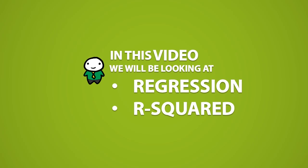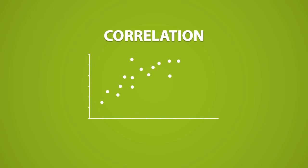In this video, we will be looking at regression and r-squared. When we talked about correlation, we talked about how we can use it to measure the direction and strength of a linear relationship shared between two quantitative variables.